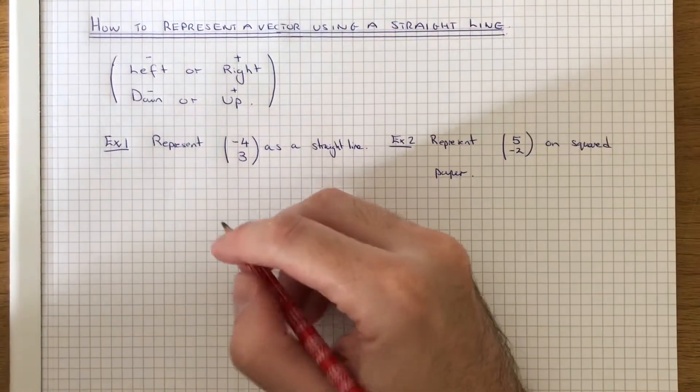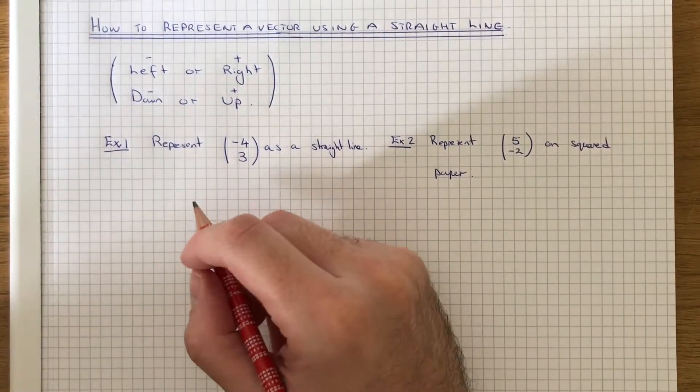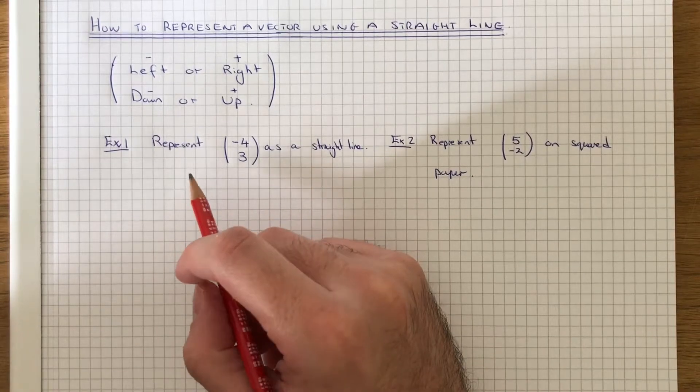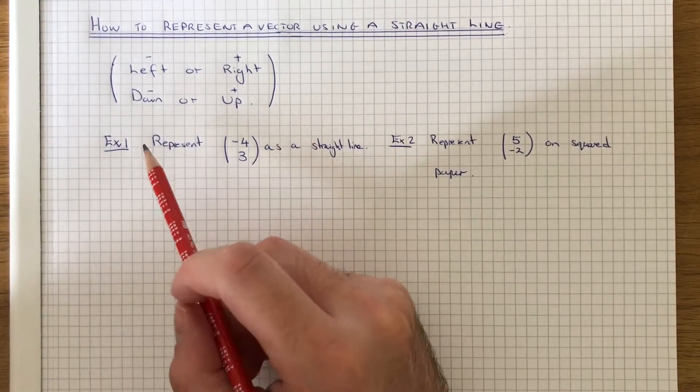Hi, welcome back. This is Maths3000. Today I'm going to show you how to represent a vector with a straight line.